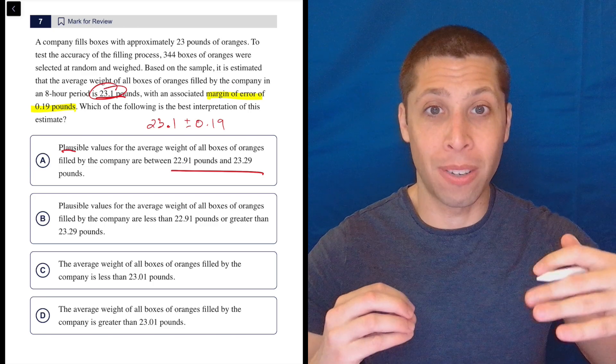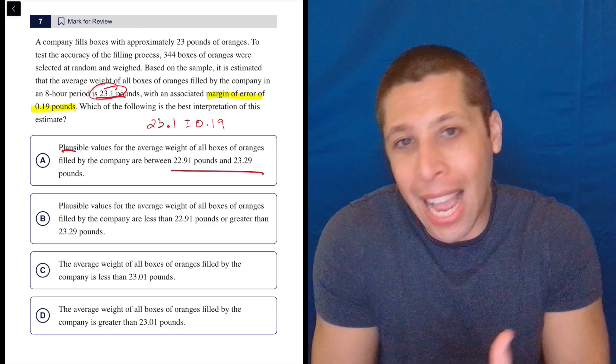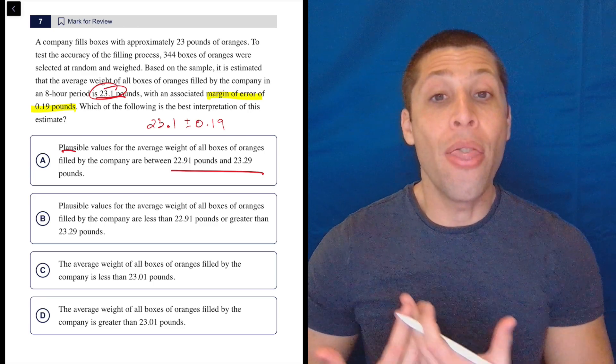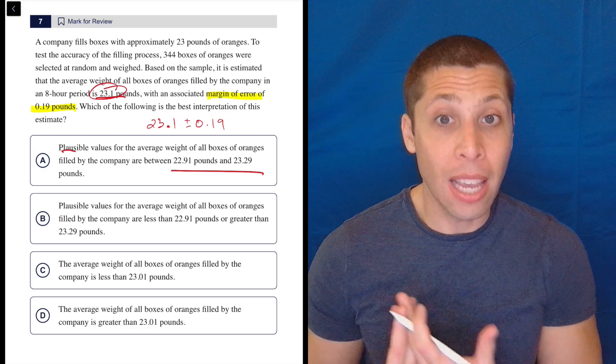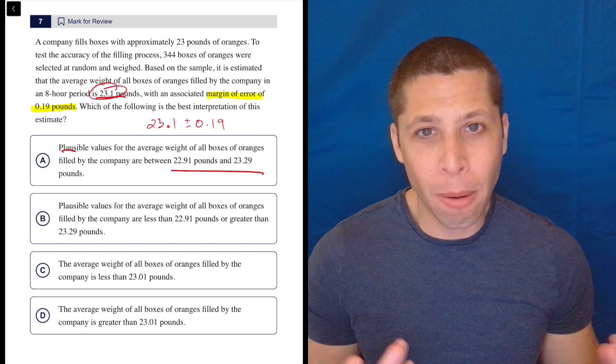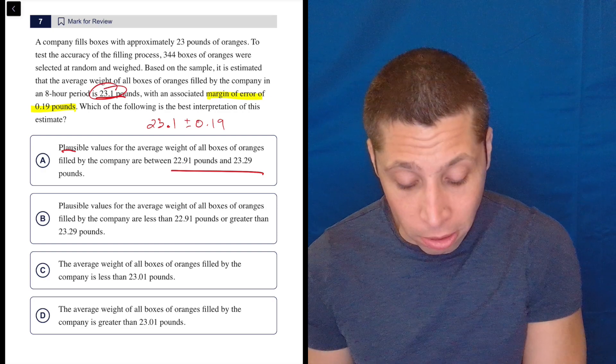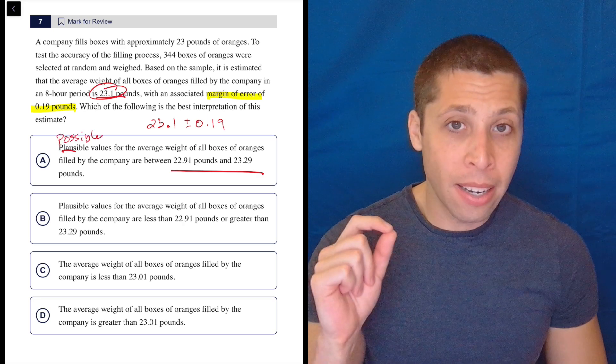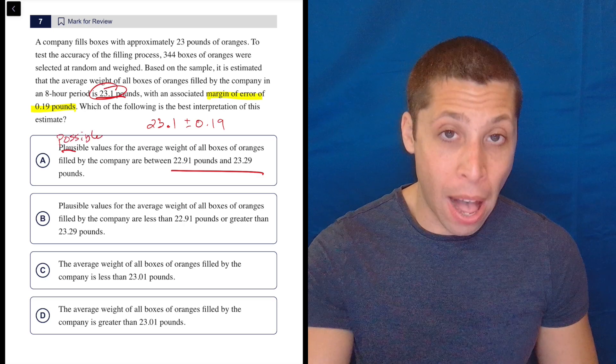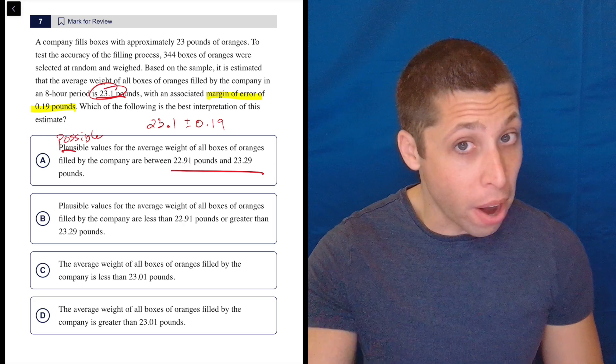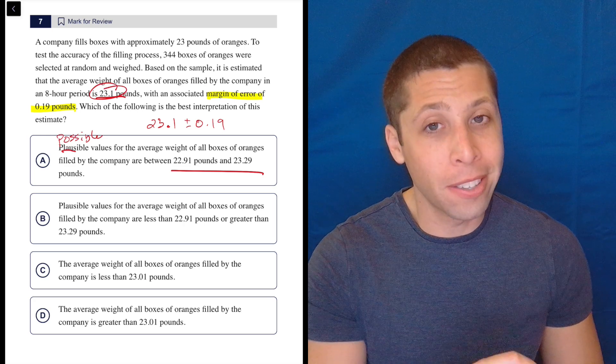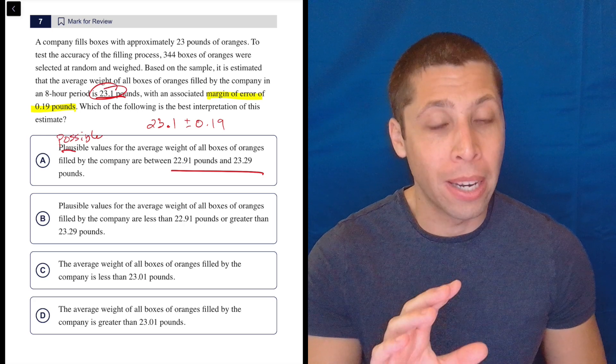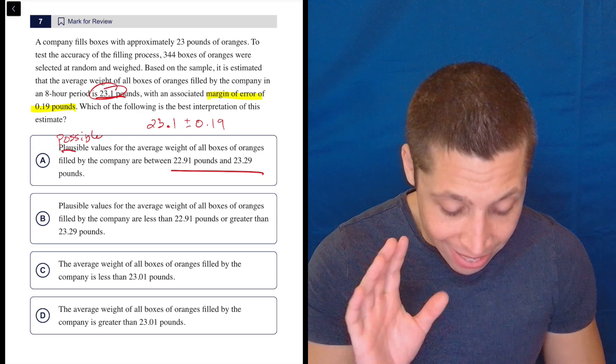And if multiple answers kind of have ranges that just by estimating sound like they could work, then I will actually do the calculation in my calculator. But for now, I'm just like, yeah, it's giving me a range. And the word plausible here is perfect because it means possible, but it's not necessary that the value is within that range. It's very, very, very likely. If you've studied statistics, you know how this actually works, but it's very likely, but it's not necessarily the case.